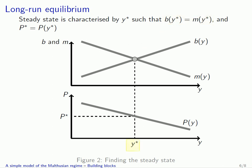Once we have the value of y*, the income per capita at steady state, in order to get p*, the steady state level of population, we just need to take a look at the lower panel of the graph, which gives us directly p* as a function of small y*.